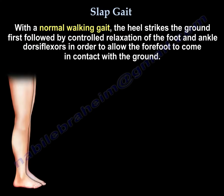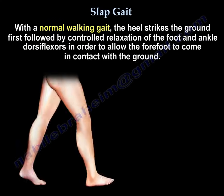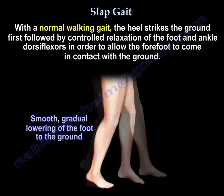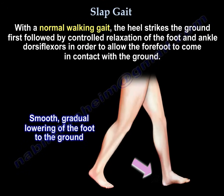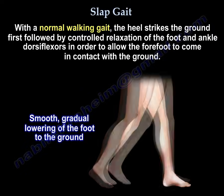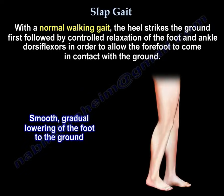With a normal walking gait, the heel strikes the ground first, followed by controlled relaxation of the foot and ankle dorsiflexors in order to allow the forefoot to come in contact with the ground.